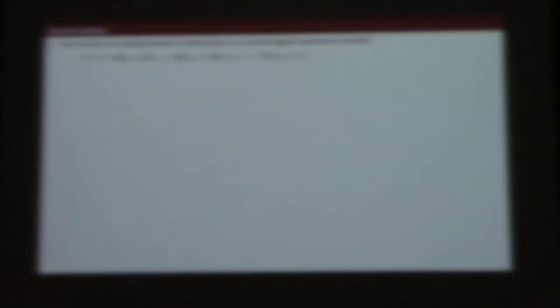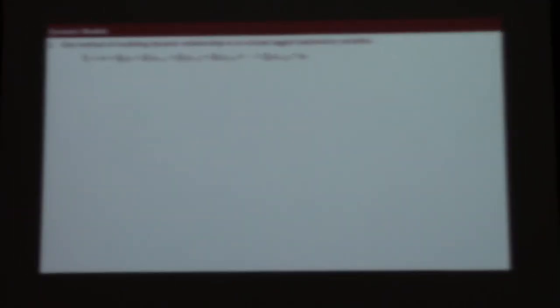One method is to include lagged explanatory variables. So we have y in period t, and we have x — advertising today — but we also have x in period t minus one, which is yesterday; t minus two, which is two days ago; t minus three, three days ago; and so on.